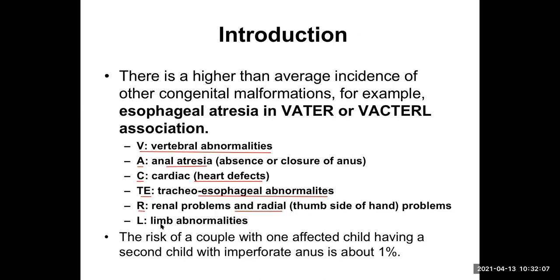And L stands for limb abnormality. So, V, A, C, T, E, R, L — VACTERL association. Or VATER association, where C is not included: V for vertebral, A for anal atresia, T for tracheoesophageal abnormality, E for esophageal atresia, R for renal or radial — VATER.